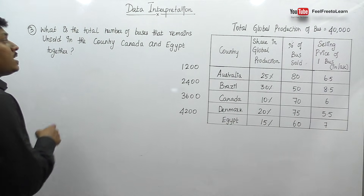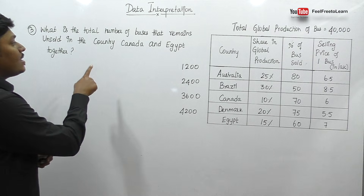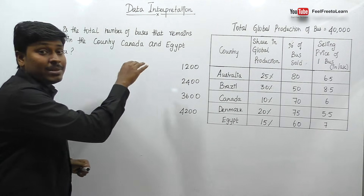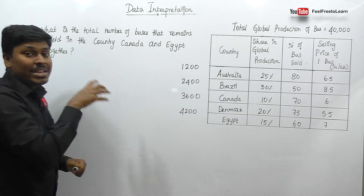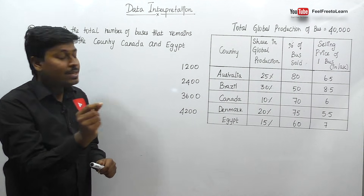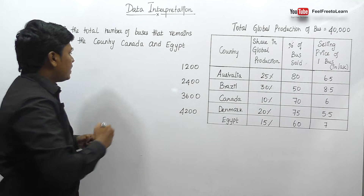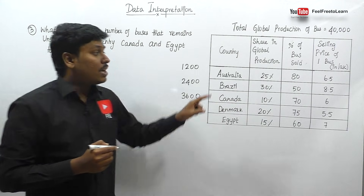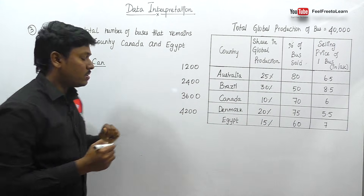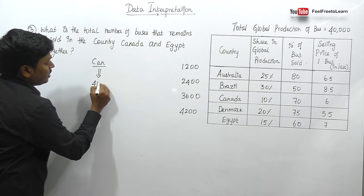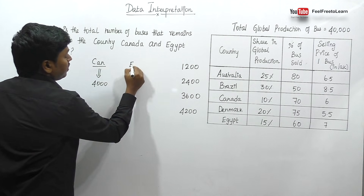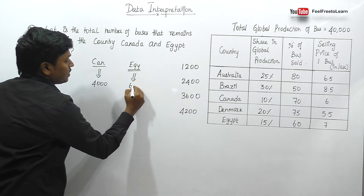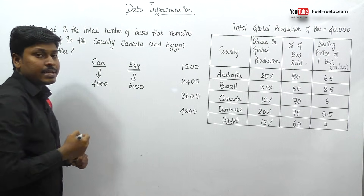Question number 3: What is the total number of buses that remains unsold in Canada and Egypt together? We need to find the total number of unsold buses in both countries. Canada is getting 10% of 40,000, which is 4,000 buses. Egypt is getting 15%, which is 6,000 buses. So Canada is getting 4,000 and Egypt is getting 6,000.